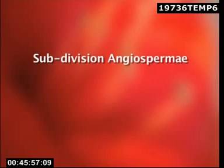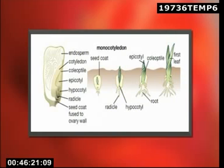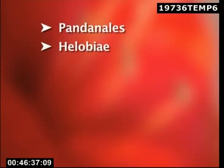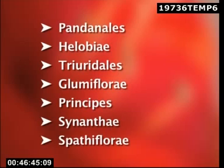The subdivision Angiospermia is based on the characters that ovules are enclosed in the ovary and tracheae or vessels are present. It is divided into two classes: Monocotyledoneae and Dicotyledoneae. The class Monocotyledoneae is characterized by a single cotyledon, leaves with parallel venation, trimerous flowers, and closed vascular bundles. It includes 11 orders and 45 families. The eleven orders are: Pandanales, Helobiae, Triuridales, Glumiflorae, Principes, Synanthae, Spathiflorae, Farinose, Liliiflorae, Scitamineae, and Microspermae.